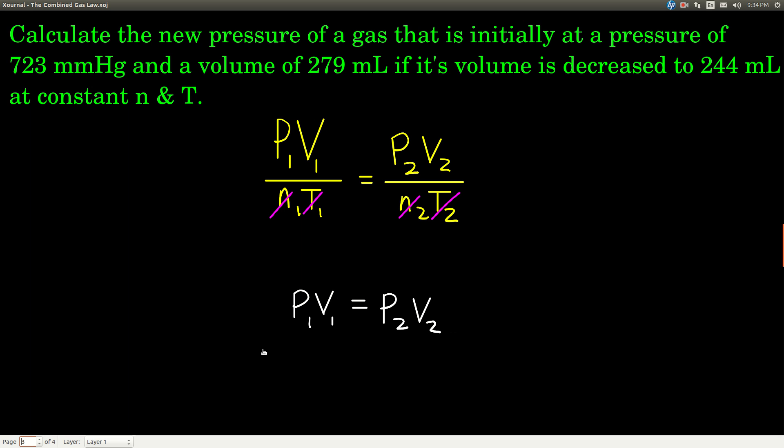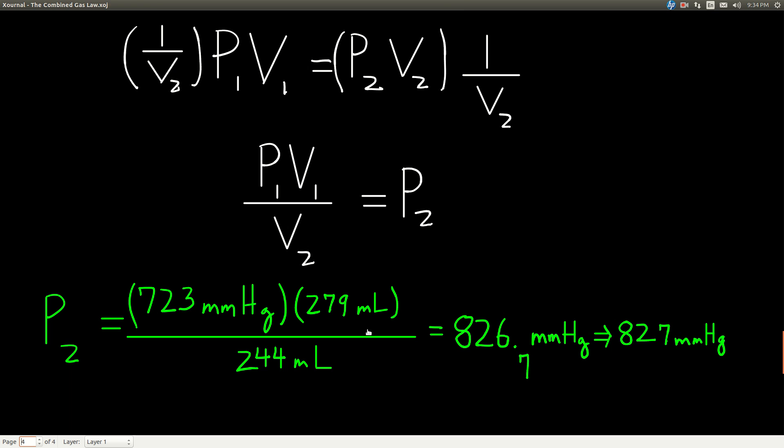Now that we know we have a simplified form of our combined gas law, then we figure out what we're trying to solve for. Well, we want to calculate the new pressure. The new means the twos, so we want P2. So now we're going to do just a little bit of algebra, multiply by 1 over V2. When we do that, the V2s cancel on the right-hand side of the equal sign and V2 goes in the denominator on the left. So we get this form, P1V1 over V2 equals P2.